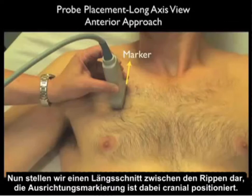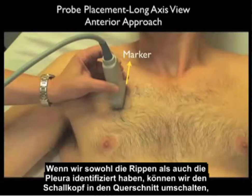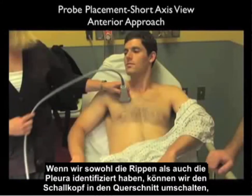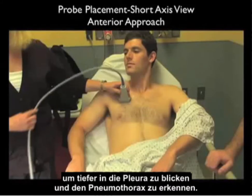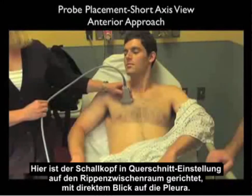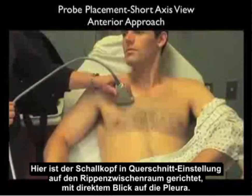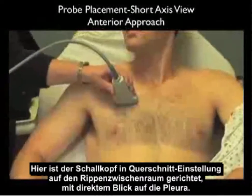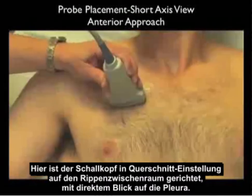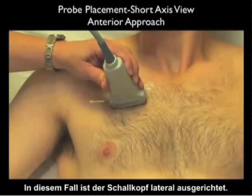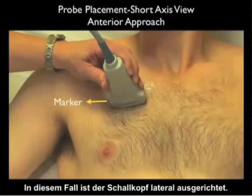Note we're looking at a long axis configuration between the ribs with the marker dot oriented superiorly towards the patient's head. Once we've identified both the ribs and the pleura, we can swivel the probe into the short axis configuration to further look at the pleura and detect pneumothorax. Here we have the probe oriented in a transverse or short axis orientation between the ribs, looking directly down at the pleura. Notice the marker dot is located towards the lateral aspect of the patient.